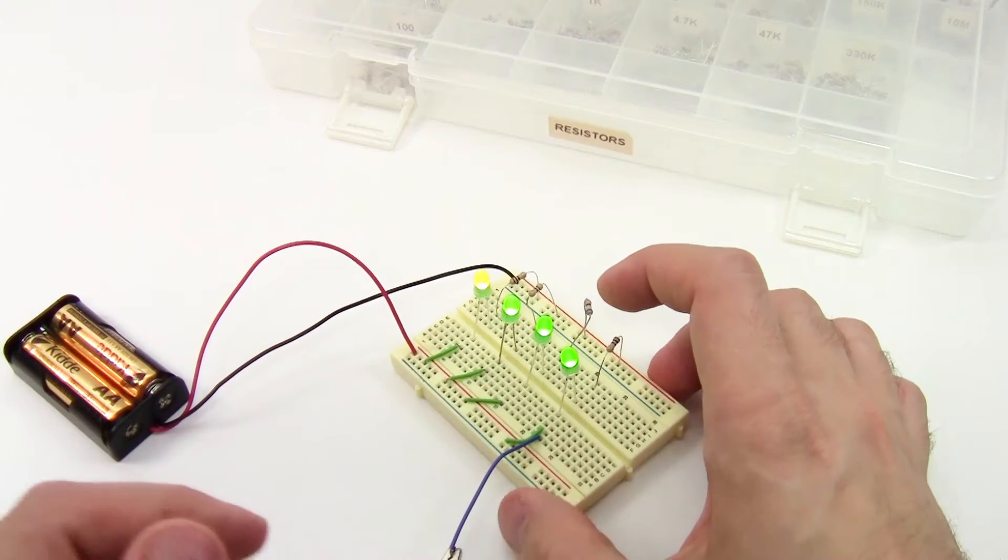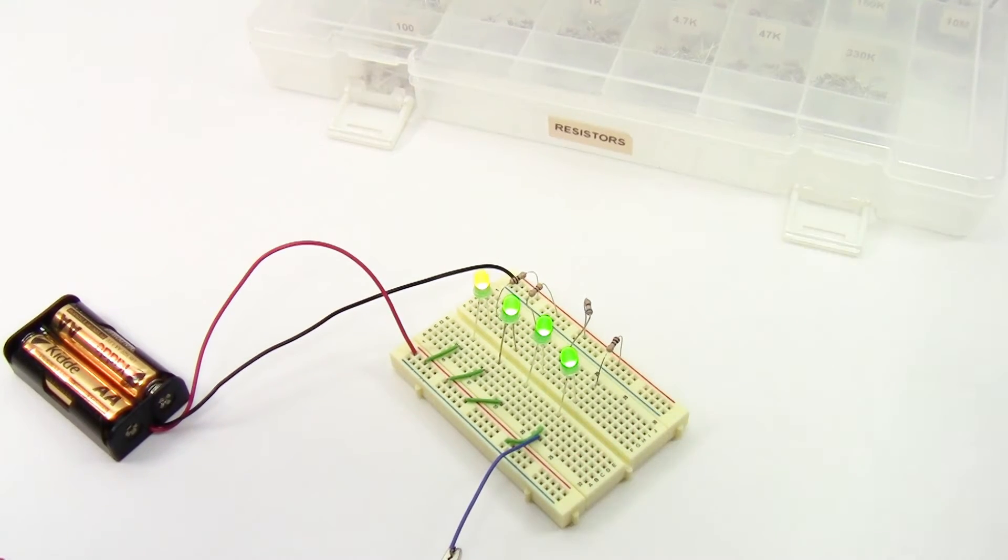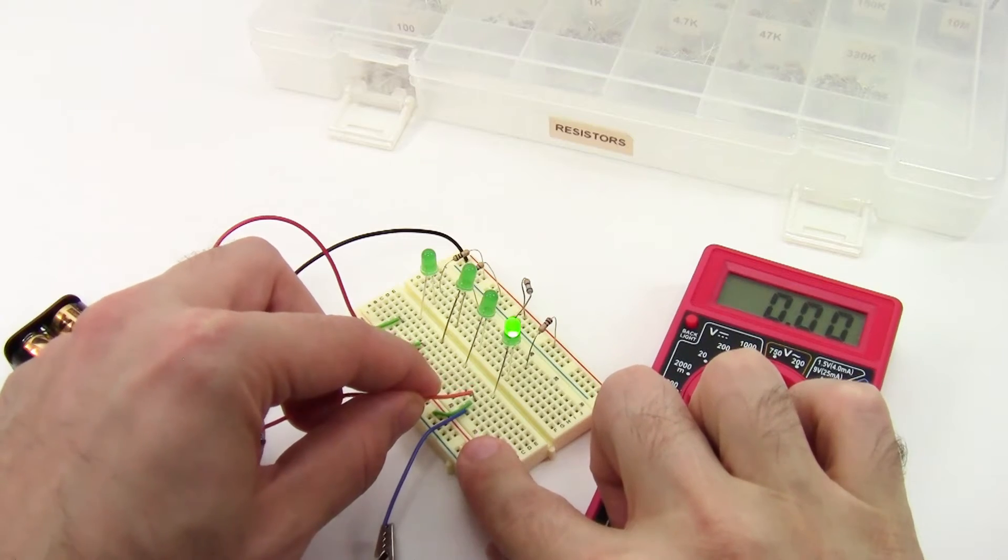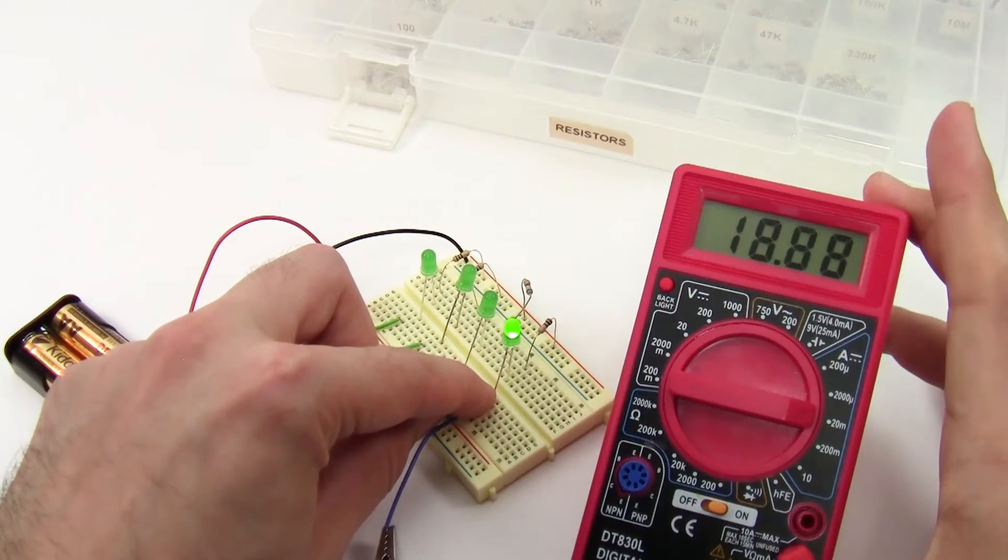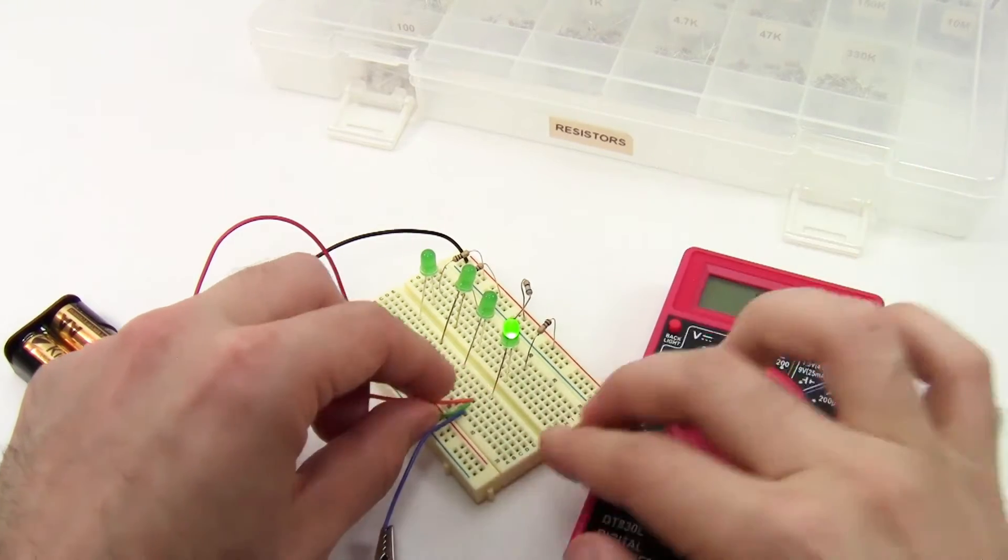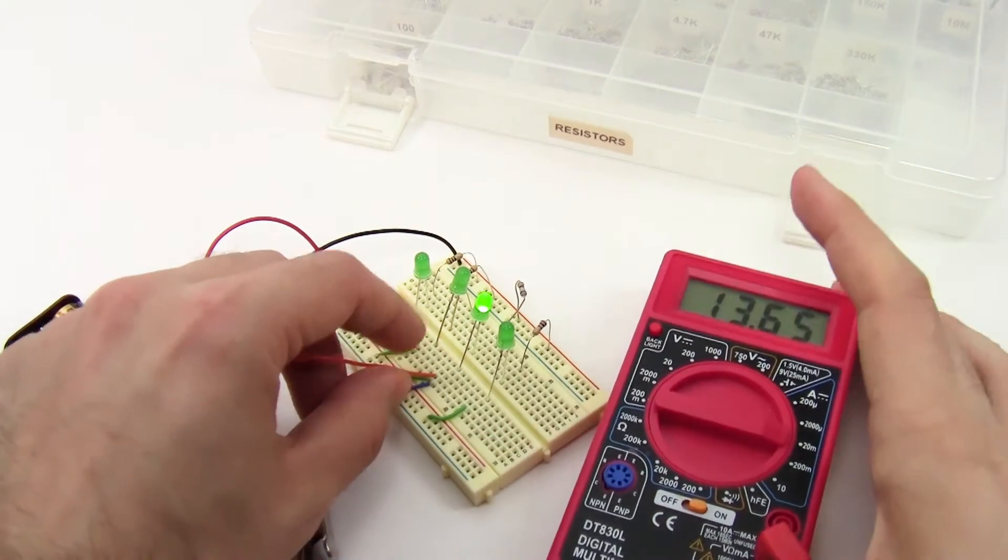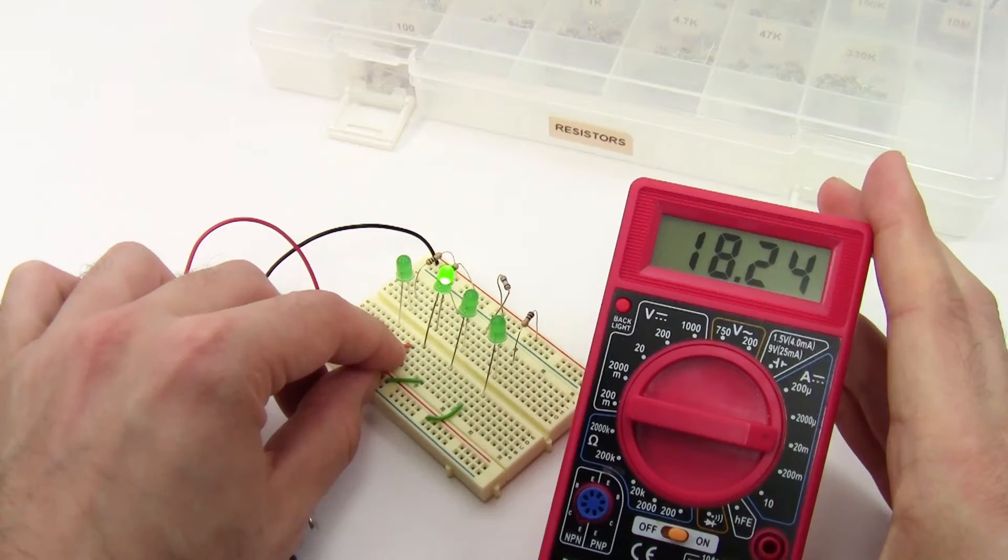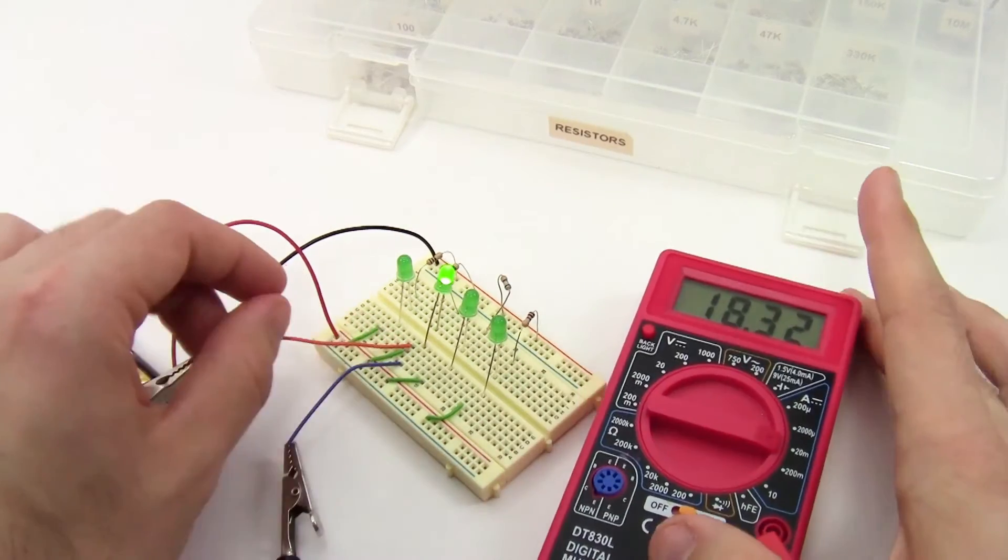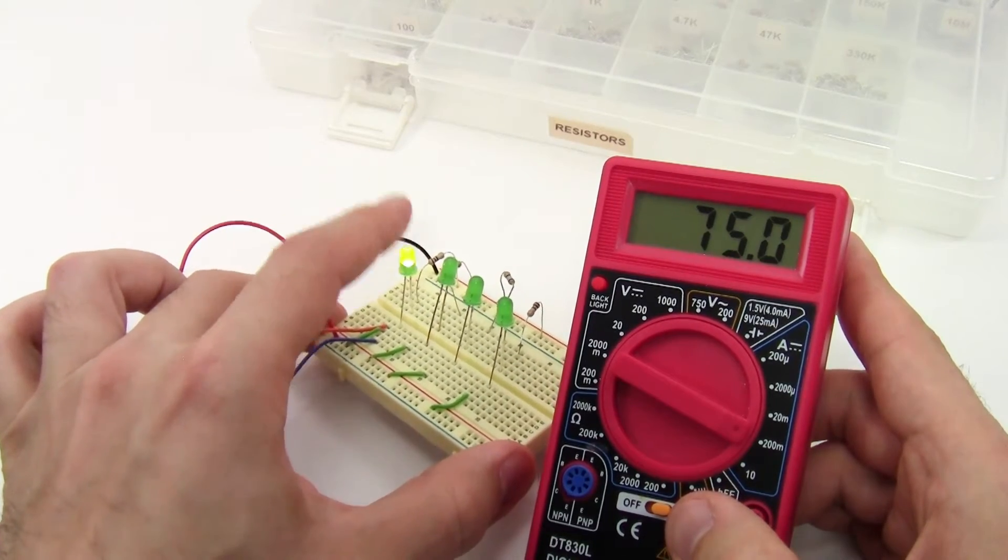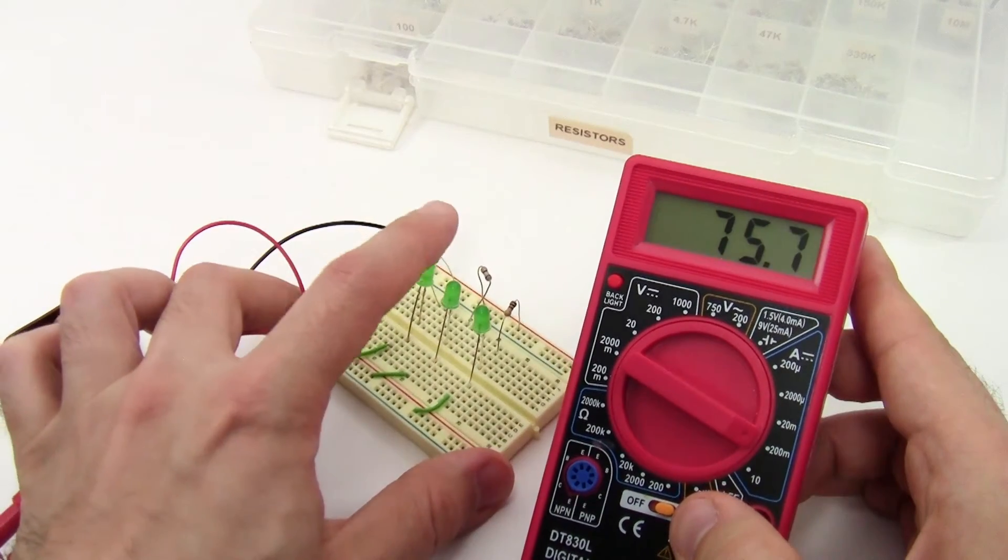Now again, visually, there's not that much difference. But if I take my multimeter here and measure each one of these individually, I can see that I'm getting about 10 milliamps through the one with the 100 ohm resistor, 13 and a half milliamps with 68 ohm resistor, 18 milliamps with the 47 ohm resistor, and almost 70 milliamps with the 10 ohm resistor. So that's too much. That's probably going to decrease the lifetime of this LED.